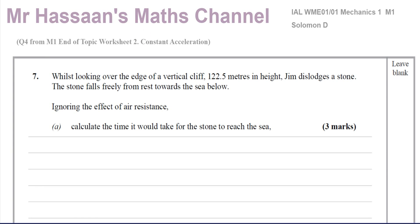This question is about some guy, Jim, who looks over the edge of a cliff which is 122.5 meters in height above the sea. He dislodges a stone and the stone falls freely from rest towards the sea below, so freely under gravity. We've got to ignore the effect of air resistance and calculate the time it would take for the stone to reach the sea.